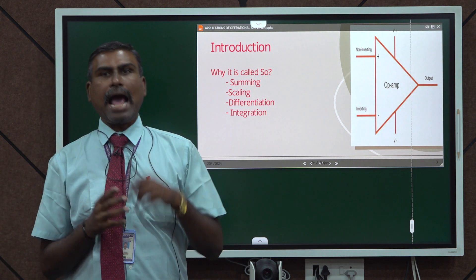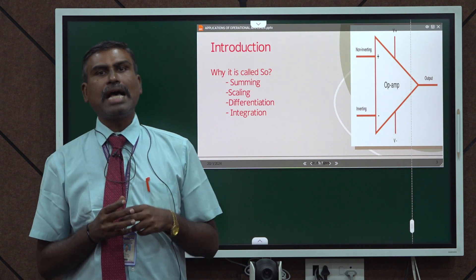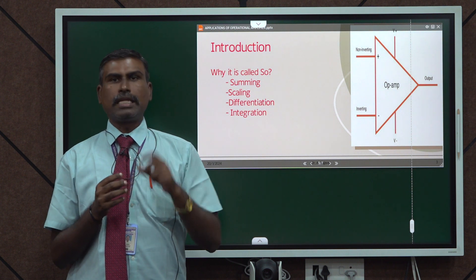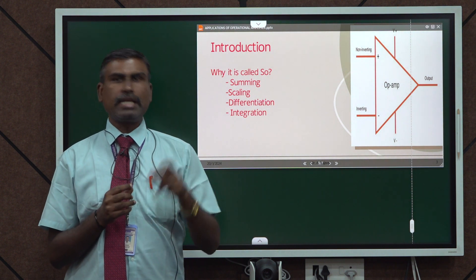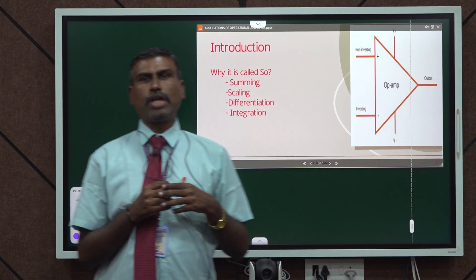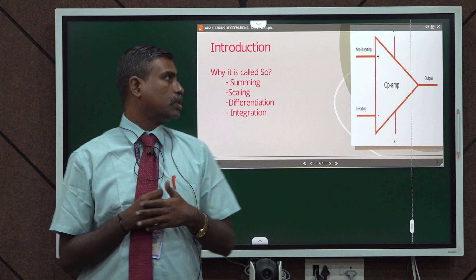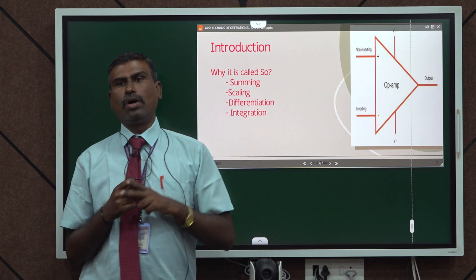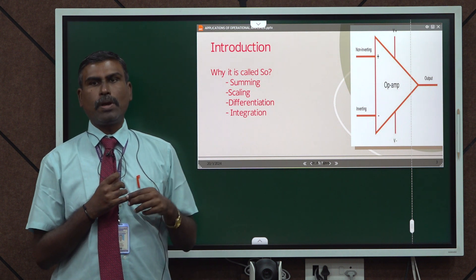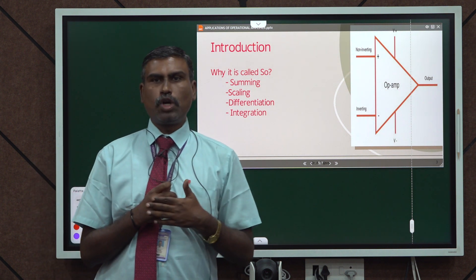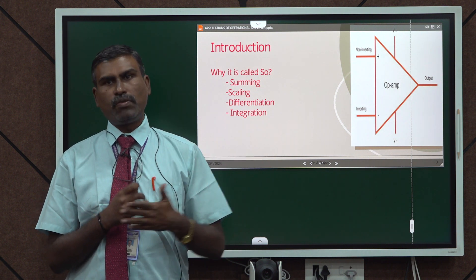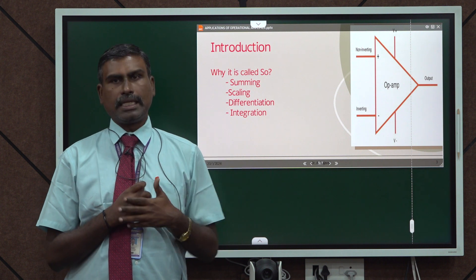First, the introduction part. An operational amplifier, or shortly called op-amp, is an IC with 8 pins. It has 2 inputs and 1 output. The second pin and third pin act as inputs — the second pin is the inverting terminal and the third pin is the non-inverting terminal. The sixth pin acts as the output. It has 2 supply pins: the seventh pin is plus VCC and the fourth pin is minus VCC. Normally we apply either plus 12V / minus 12V or plus 15V / minus 15V to this IC.